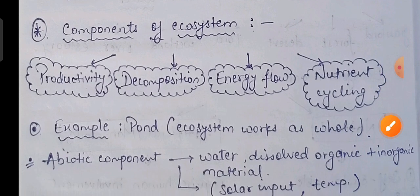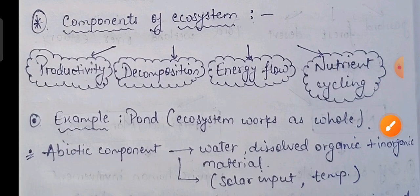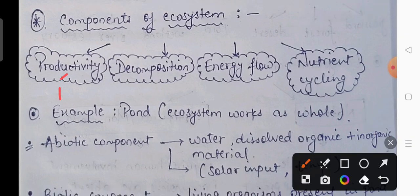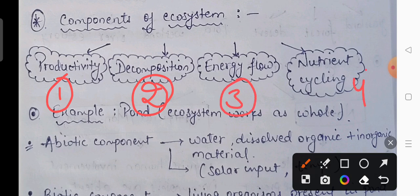Now what are the various components of ecosystem? So basically there are four main components of ecosystem: the first is productivity, the second is decomposition, the third is energy flow, and the last one is nutrient cycle. In 4 components ke bina ecosystem function nahi kar sakta. Ab inhi 4 components ko samajhne ke liye hum ek example lenge — that is pond.